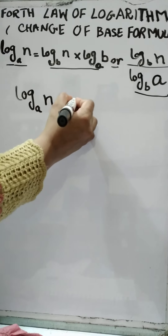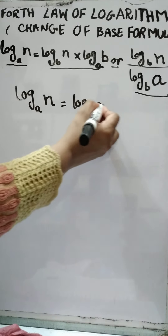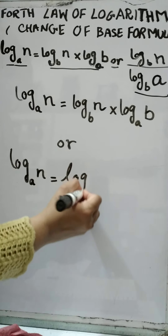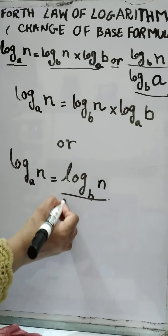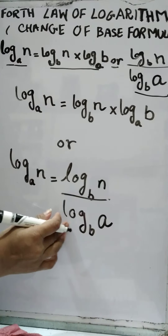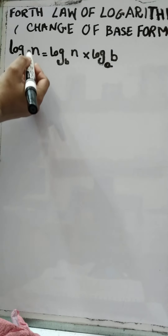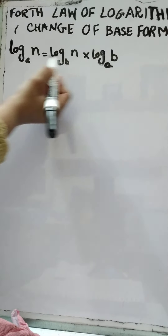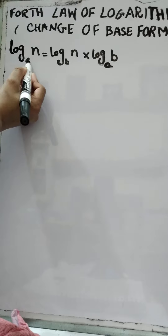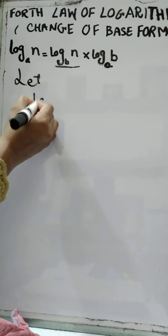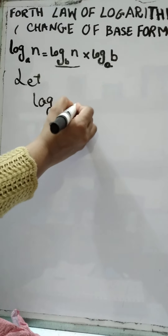We need to prove log base a of n equals log base b of n into log base a of b, which is equal to log base b of n over log base b of a. We check each base: log base a, log base b, and log base a. We let log base b of n equal to x.